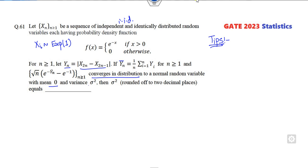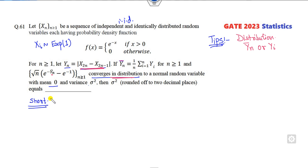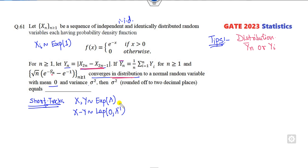What is the shortcut tip? Whenever there is a question about distribution, you first find the distribution of the required random variable — they are talking about Y_N, so find the distribution of Y_N bar. Y_N bar depends upon Y_i, so you first find the distribution of Y_i, which is the difference of exponential distribution variables. You can solve this question within 15 seconds. If X and Y follow exponential distribution with parameter lambda, then X minus Y will follow the Laplace distribution with parameter 0 and lambda inverse. This is already explained in my theory lecture on Laplace distribution.